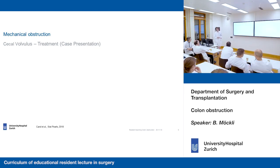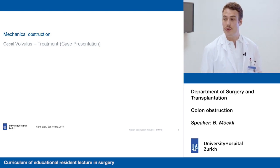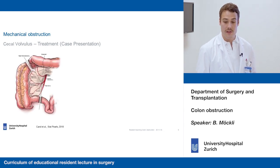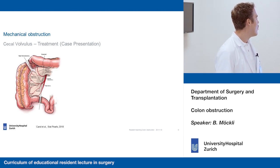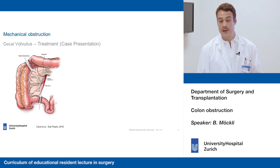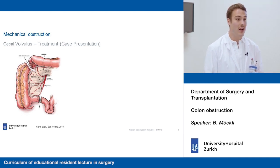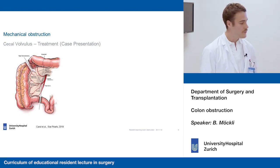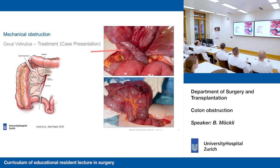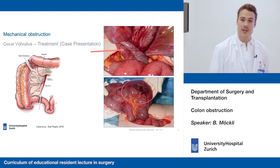Coming back to the case presentation: the CT scan showed cecal volvulus and it was decided to take the patient to the OR. The gold standard for treatment of cecal volvulus is right hemicolectomy or ileocolic resection, which is what the patient underwent. Conservative management is not really recommended given the high risk of perforation with colonoscopy, and colonic necrosis can be missed in up to 20–25% of patients. Intraoperative pictures show the twisted segment of bowel and some necrosis in the cecum just before perforation. The patient underwent the resection and did fine.